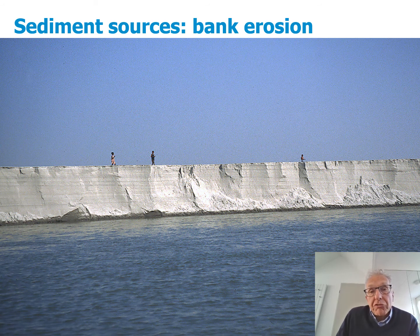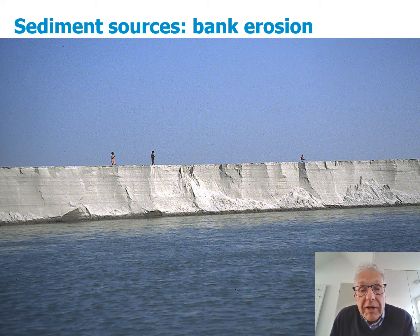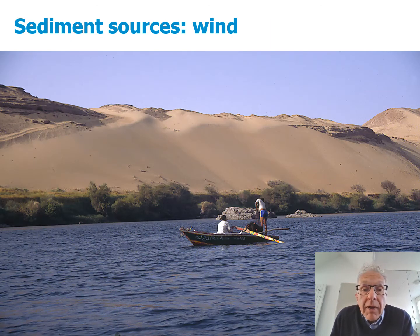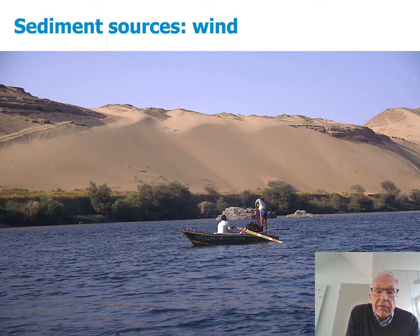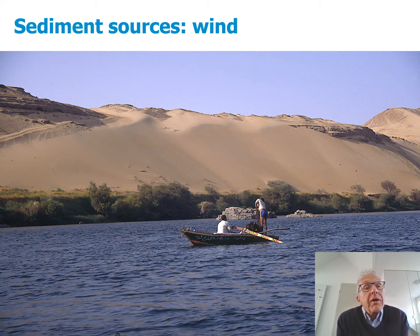Further downstream, sediment enters the river by bank erosion, like you see here — an eroding island in the river Brahmaputra in Bangladesh. Sand can even come in by the wind, as you see here along the river Nile at the first cataract, where the surrounding desert is a source of material for the river.